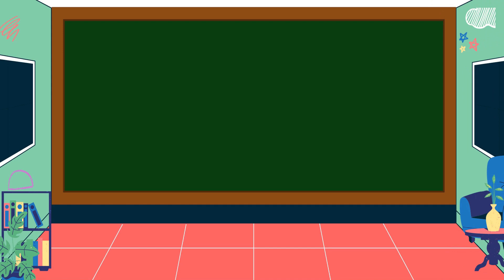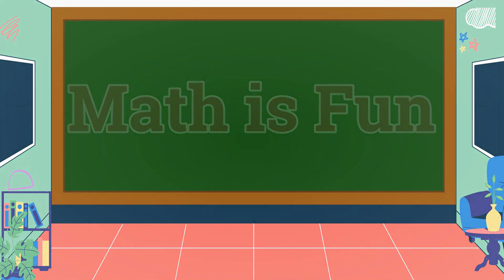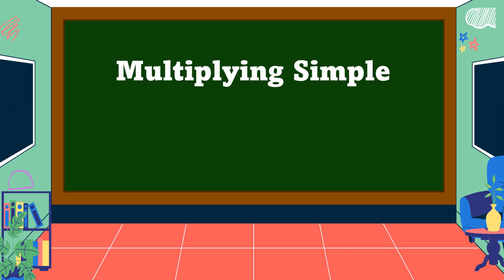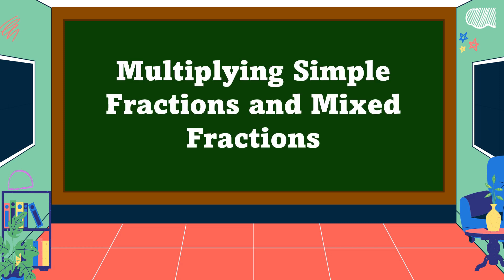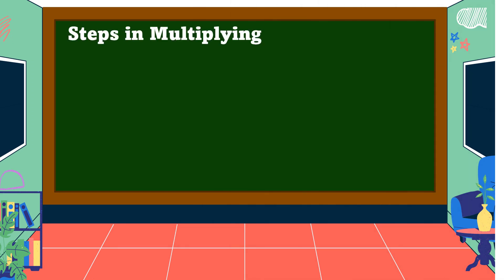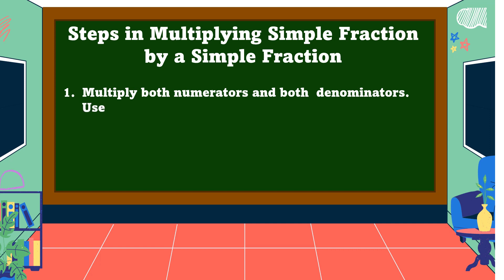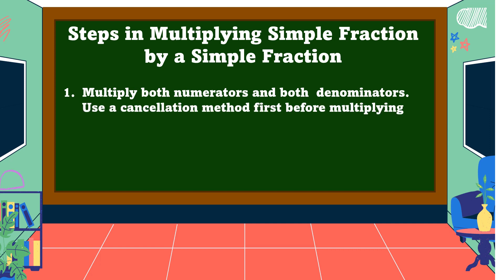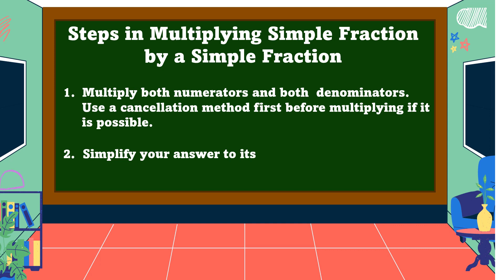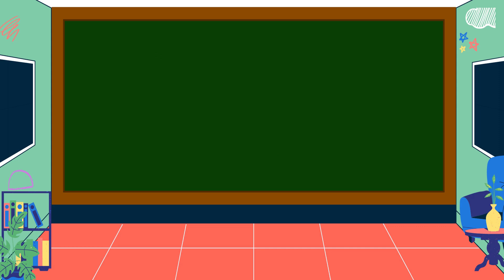Hello everyone, welcome to Math is Fine. Our lesson for today is all about multiplying simple fractions and mixed fractions. These are the steps in multiplying a simple fraction by a simple fraction: number one, multiply both numerators and both denominators — use a cancellation method first before multiplying if it is possible; number two, simplify your answer to its lowest term whenever possible.